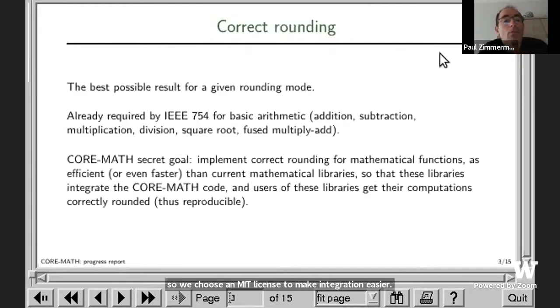Everybody knows what correct rounding is. This is the best possible result for a given rounding mode. This is already required by the IEEE standard for basic arithmetic: addition, subtraction, multiplication, division, square root, and the fused multiply-add that some people already spoke about. Unfortunately, many people don't know that correct rounding is not required for mathematical functions. So when you compute the exponential of some number, a library could give a minus one and as Martin pointed out, this is perfectly in the standard.